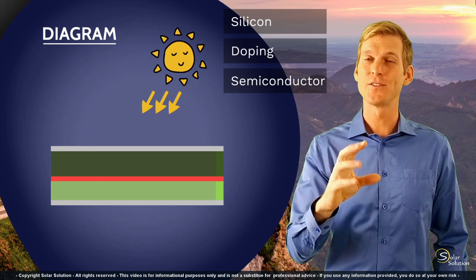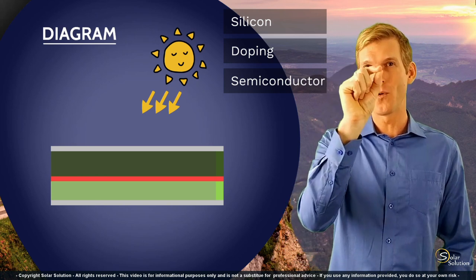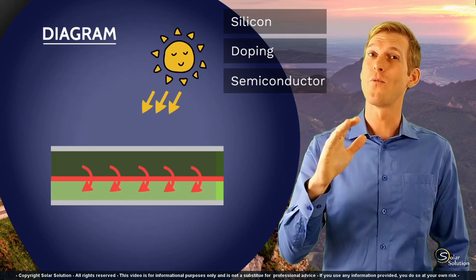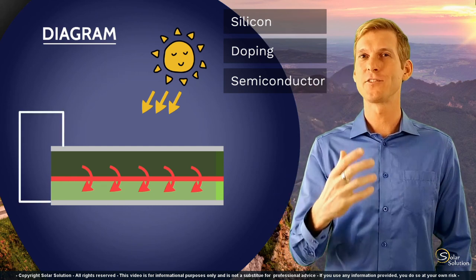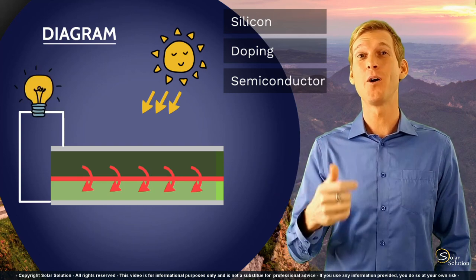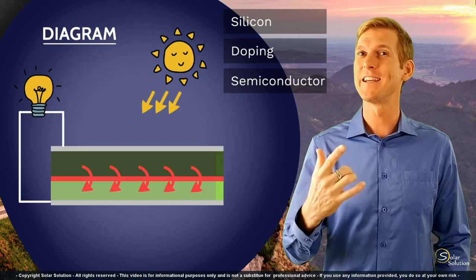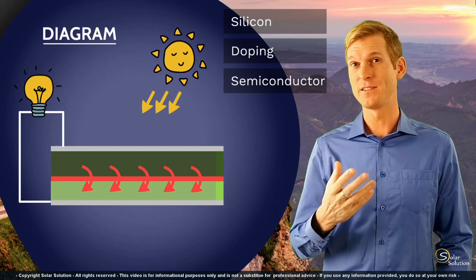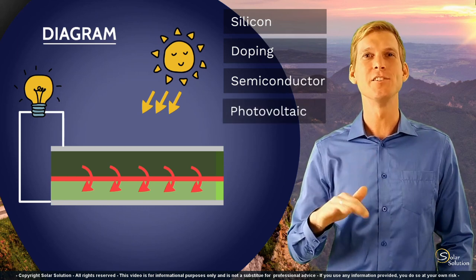If we take this piece of semiconductor material and place it outside in the sun, once the sunbeams hit it, at the very boundary layer — the p-n junction — between the two sides, something starts to happen: electrons, which are the driving force behind electricity, start to jump from one side to the other. If we place a wire between both sides and connect an electrical appliance — in this case a light bulb — we can power it up. That's the photovoltaic effect.